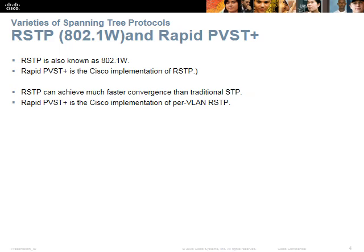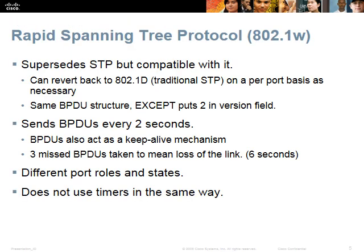As their names imply, Rapid STP and Rapid PVST+ were designed with rapid convergence in mind. RSTP was also designed to be backward compatible with the traditional STP, 802.1d. It uses the same BPDU structure with the exception of putting 2 instead of 0 in the version field. The difference between these protocols is not so much with the communication between switches as with the processing within each switch. RSTP uses different port roles and states than traditional STP, and uses timers differently.